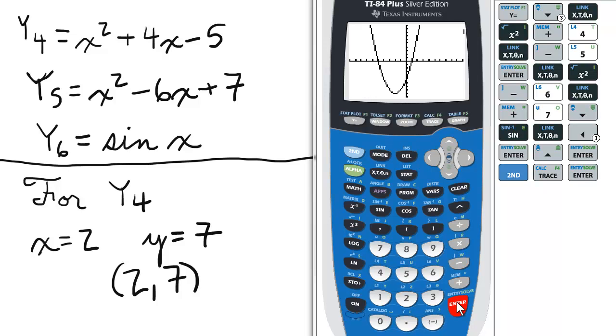And then there's the graph of Y4 equals x squared plus 4x minus 5. Notice it's asking us with this prompt, x equals, for us to input an x value. Let's input 2 and press enter.